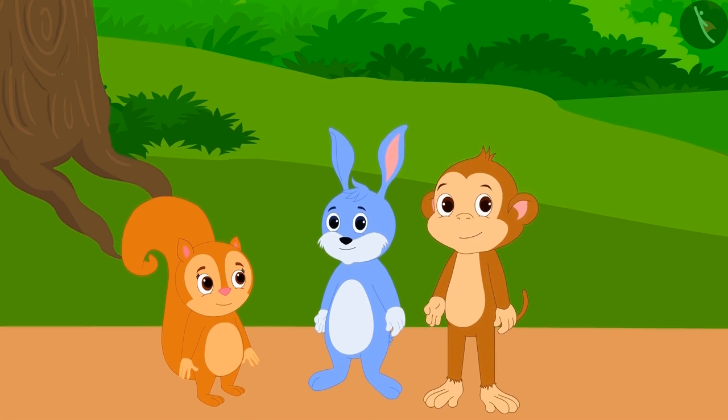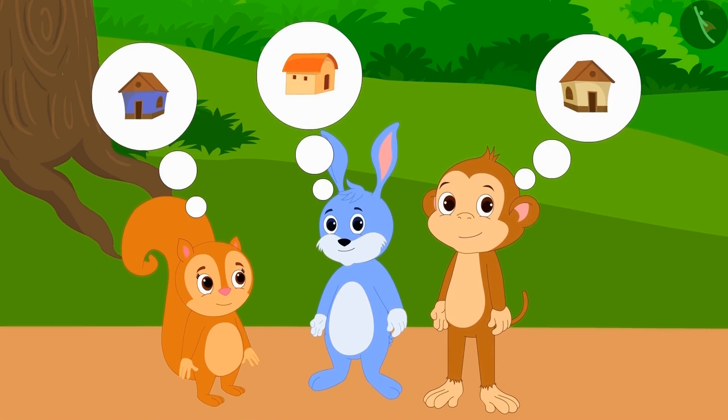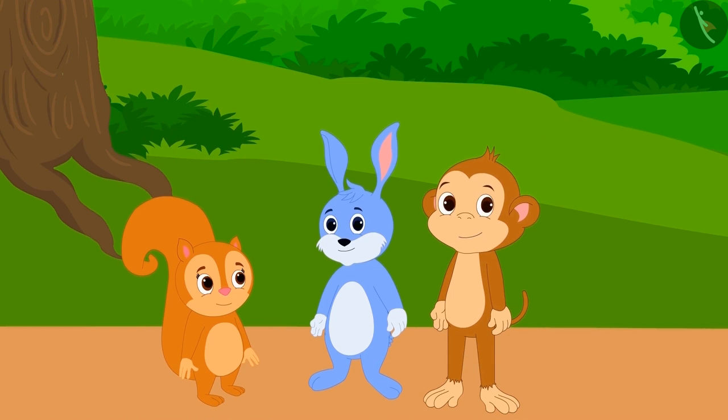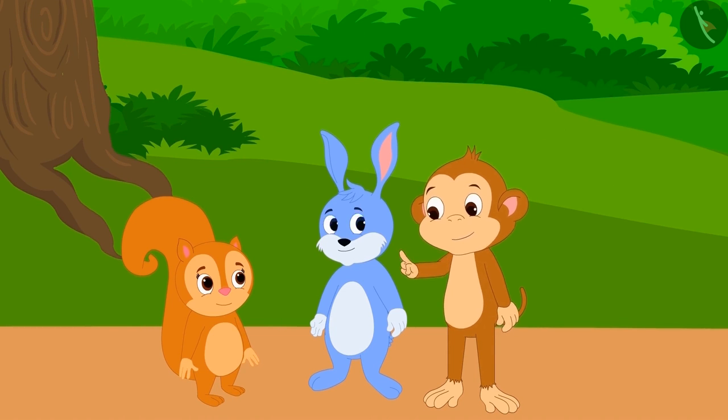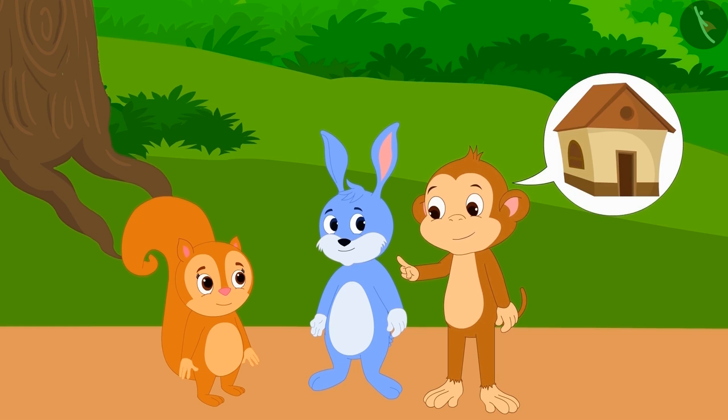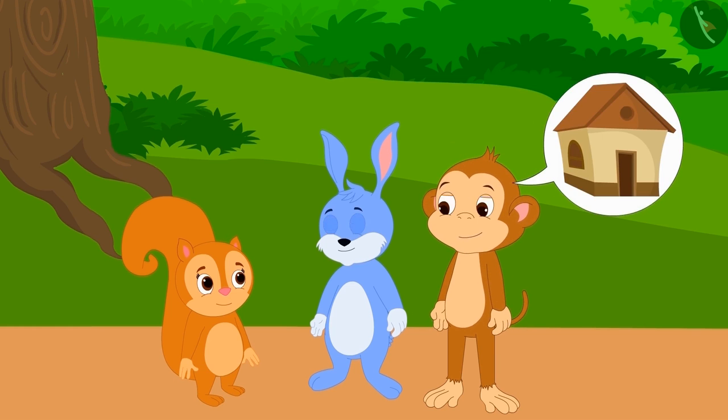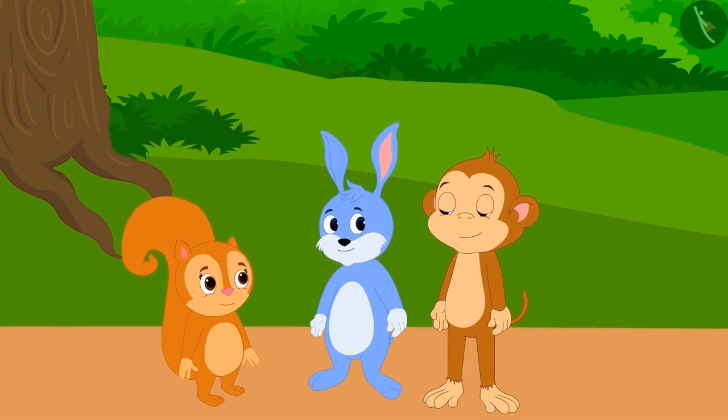Chanda Squirrel, Bunny Rabbit and Babban Monkey decided to build a house in the forest. Babban told Chanda and Bunny that they should build a house together so that their house is the strongest. But Chanda and Bunny refused and said that they will build their own separate houses.